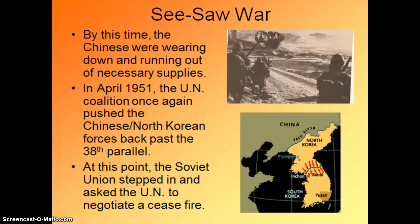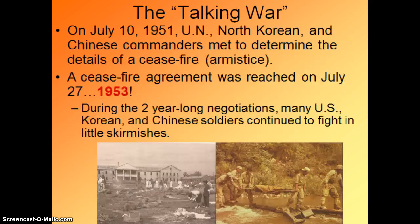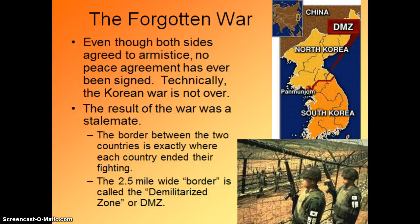So they get to Seoul, and at this point in time we're at a standstill. Interestingly, it's the Soviets who suggest a ceasefire — not a peace treaty, a ceasefire. For the next two years, North Korea, South Korea, the United Nations, and the Chinese meet to determine the details of this ceasefire, and it takes them two years to negotiate. This is not a peace treaty; it is merely an agreement to stop shooting each other. During this time, soldiers are still fighting in small battles, but nothing compared to the first year of the war. Even though both sides agree to an armistice, which is similar to a ceasefire, no peace treaty has ever been signed — thus technically the Korean War is not over. It remains a stalemate. Technically speaking, these two countries are still at war; they're just not shooting at each other.